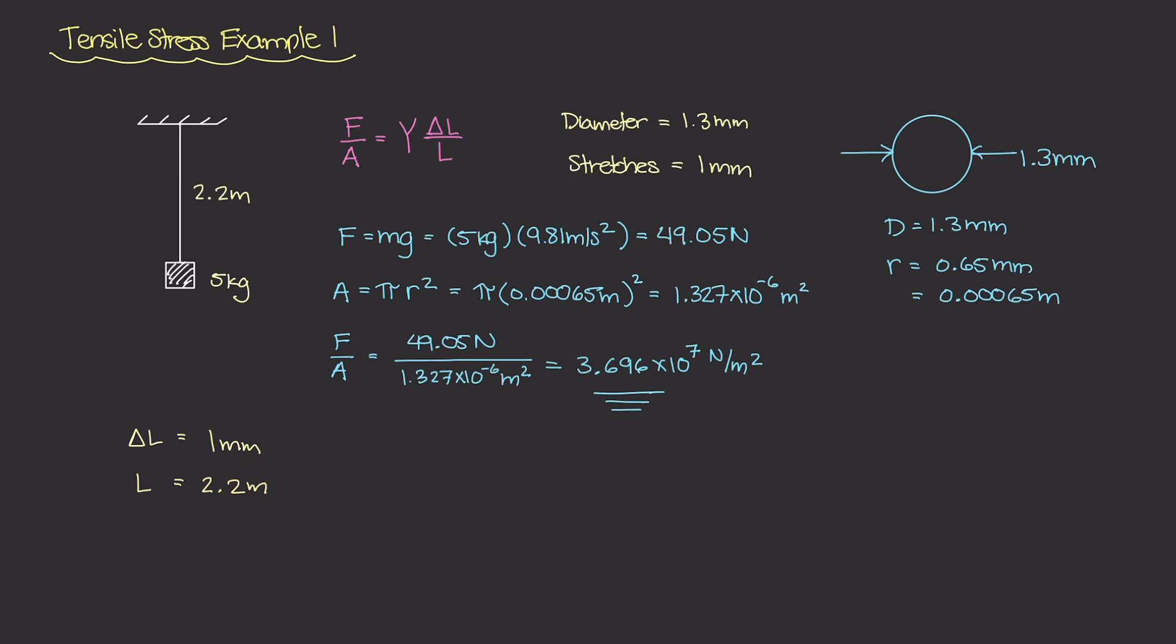So I'll just convert the ΔL value, this 1 millimeter into meters, and I can do that by dividing by 1,000 and I'll get 0.001 meters. So we can take both of these values and do ΔL over L to figure out what the strain is. That is 0.001 meters over 2.2 meters. And I get a strain of about 4.5454 times 10 to the minus 4th.